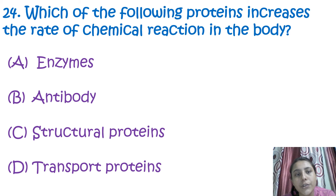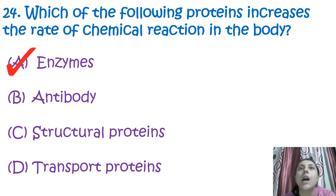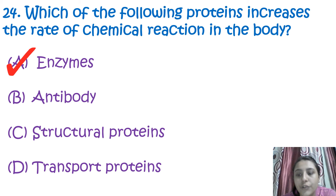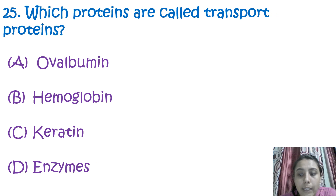The next question is: which of the following proteins increases the rate of chemical reactions in the body? The correct answer is enzymes — enzymes are substances used to increase or decrease the rate of reactions in the body.